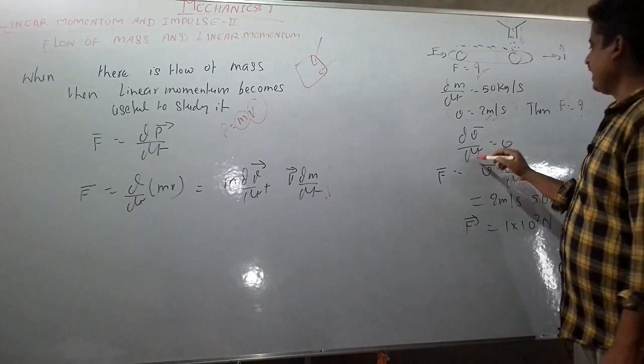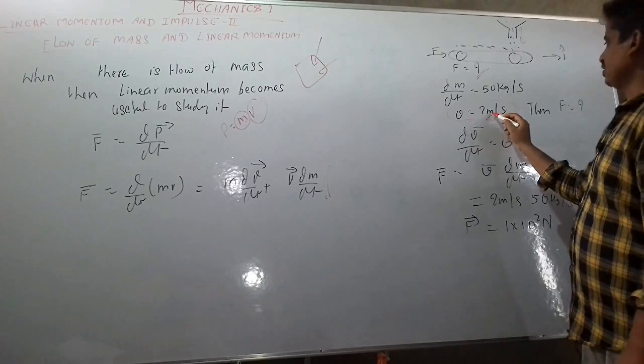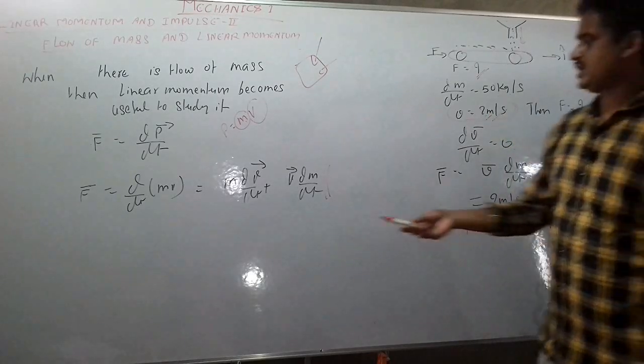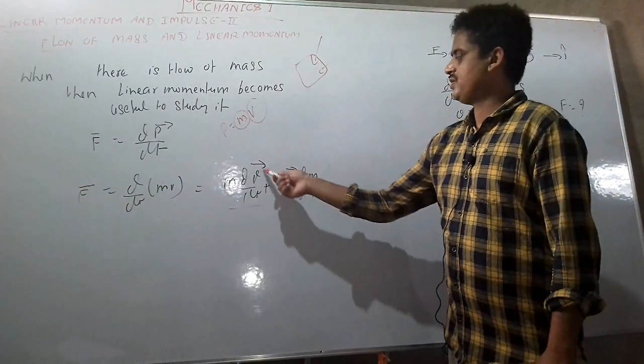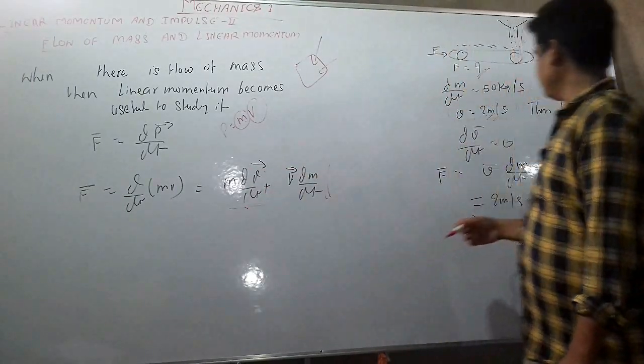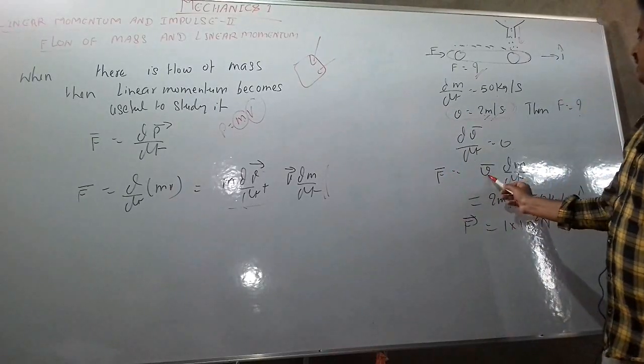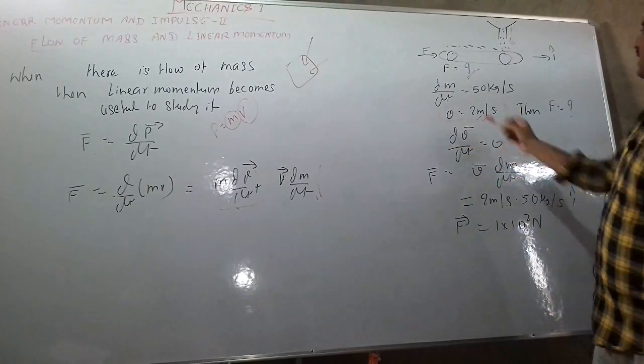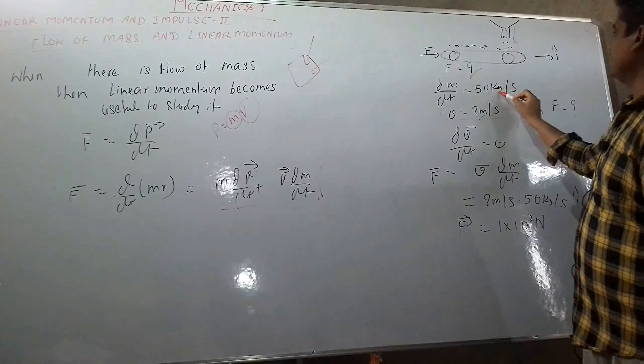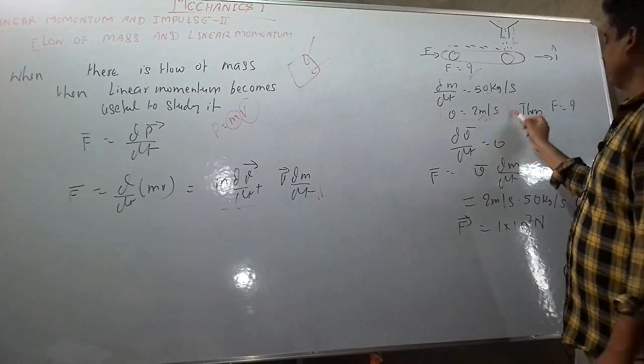First of all, dv by dt is 0 because v is constant at 2 meter per second. It means this term will be 0. It means we are only left with F equal to v dm by dt, and here dm by dt is 50 kg per second and v is 2 meter per second.